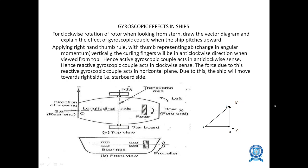The effect in ships can be applied using the right hand thumb rule: with the thumb representing the axis vertically, the curling fingers remain in anti-clockwise direction when viewed from the top. Hence, the active gyroscopic couple acts in an anti-clockwise sense, while the reactive gyroscopic couple acts in the clockwise sense. The force due to this reactive gyroscopic couple in the horizontal plane causes the ship to move towards the right side, i.e., the starboard side.